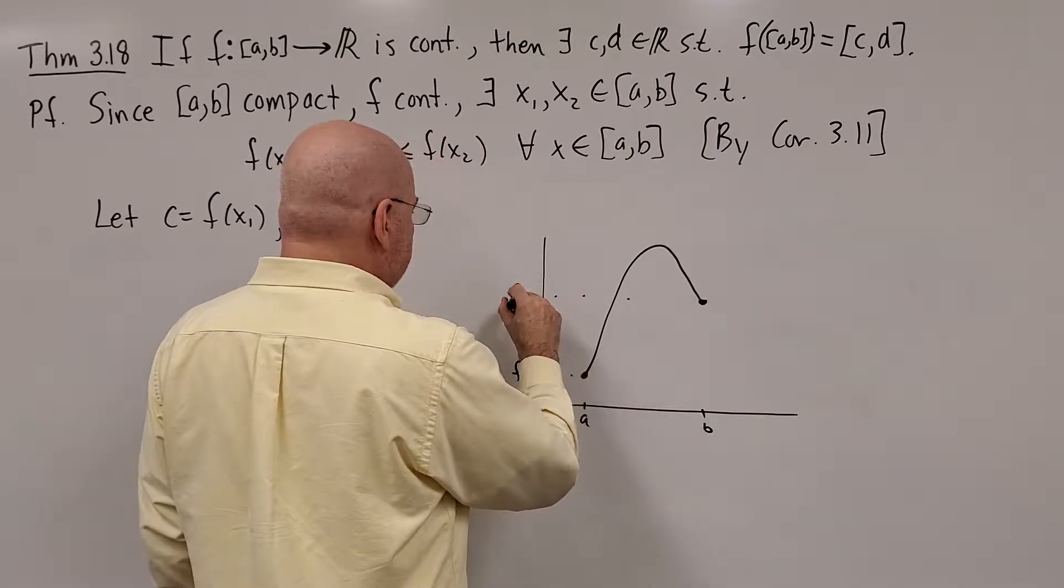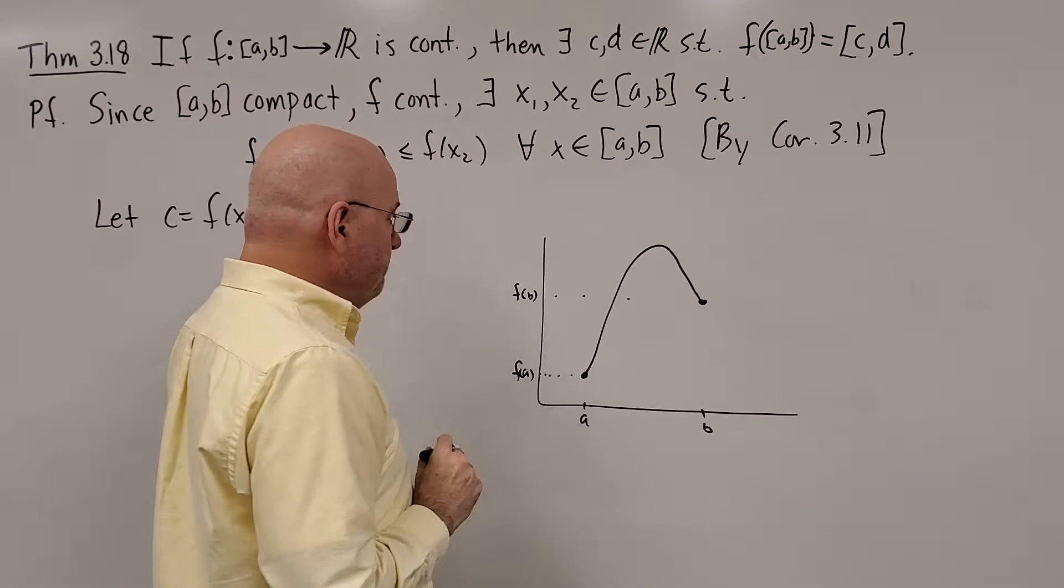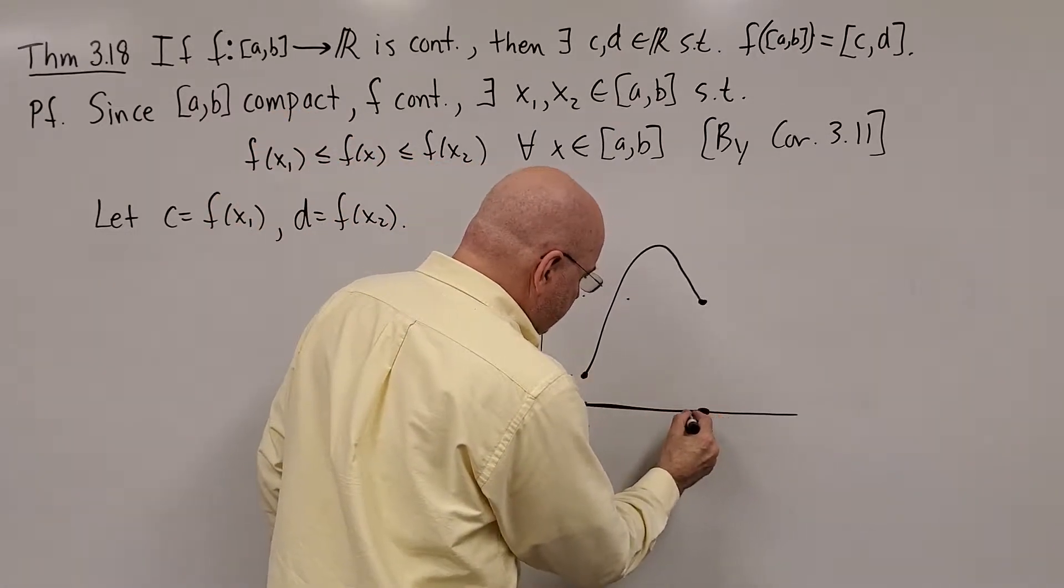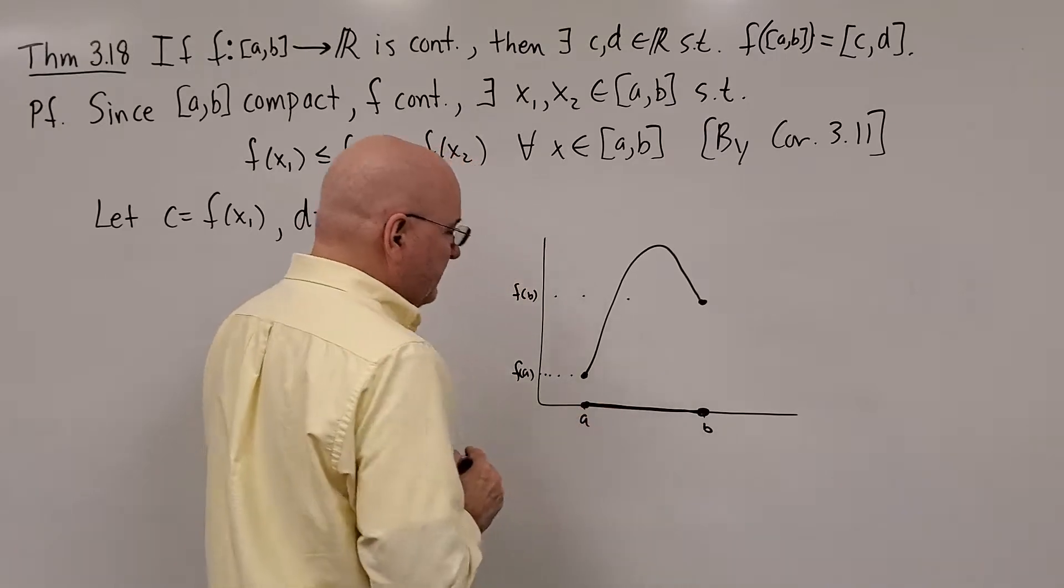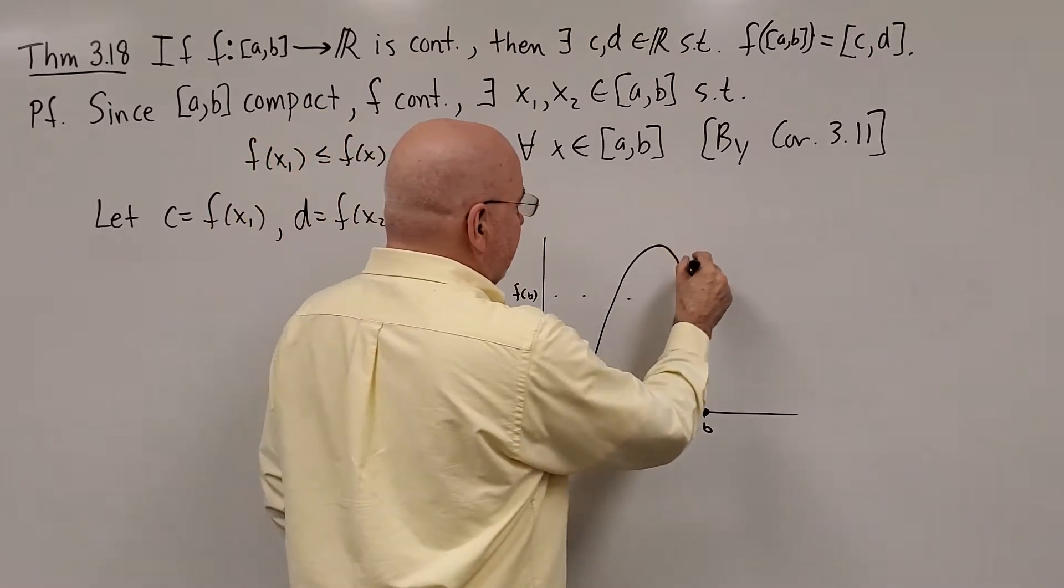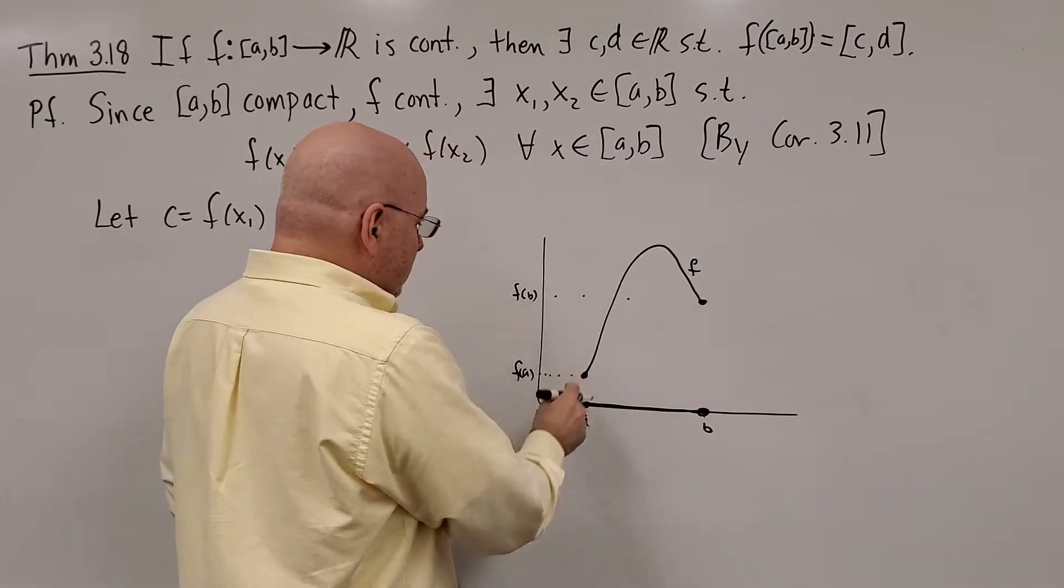A to B being a closed bounded interval, what is the image of this function? Well, all you need to do is go to the bottom point, the lowest point, and not F of B necessarily but the highest point of the graph.